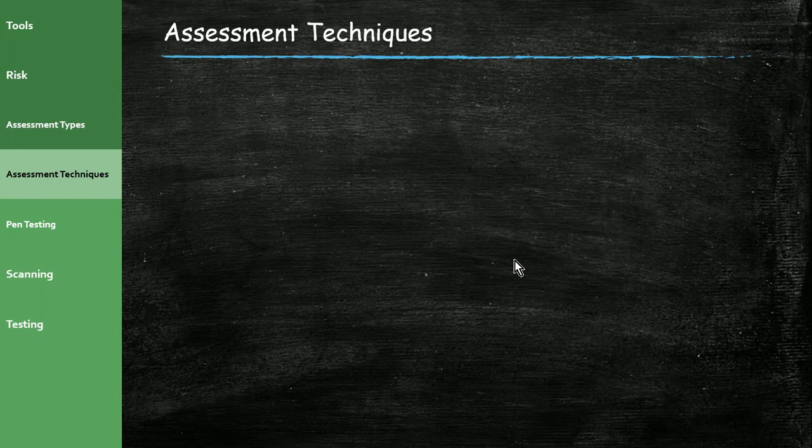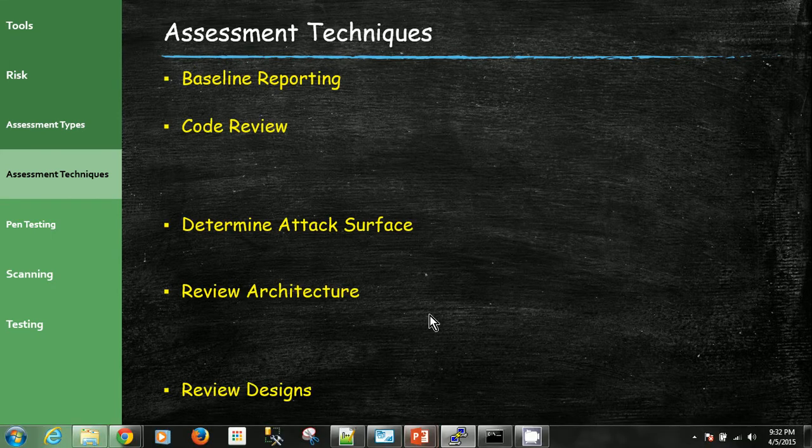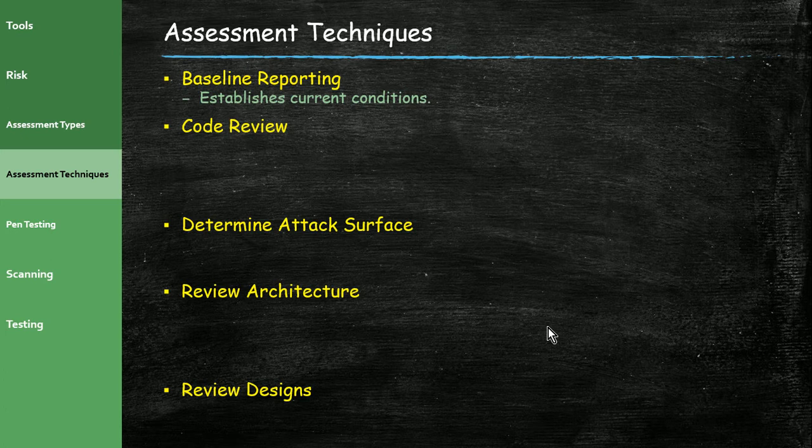Assessment techniques include baseline reporting — establishing the current conditions of your systems and asking: are all servers and systems at or above our established baseline? If our baseline says all systems should be at a certain Windows patch level, we can probe systems and find any that are missing those patches, indicating we're not meeting our baseline. This is one assessment technique that helps us discover threats and vulnerabilities.